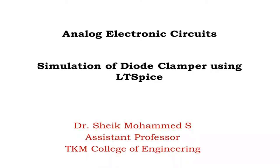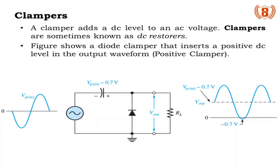In this session I am going to present simulation of diode clamper circuits using LTSpice. Before moving on to the simulation part I will briefly explain what a diode clamper is. Clamper circuits are used to place either the positive or negative peak of a signal at a desired level — the DC component is simply added or subtracted to or from the input signal. The clamper circuit is also referred to as a DC restorer or AC signal level shifter.